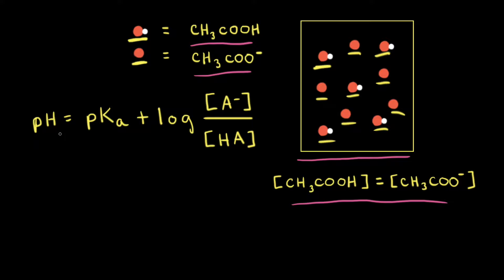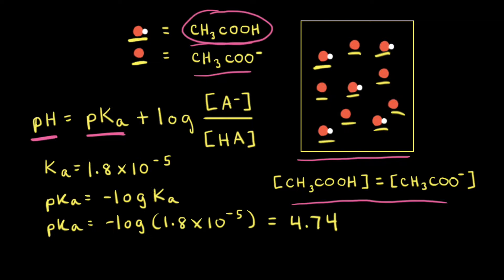Next, let's think about the Henderson-Hasselbalch equation. Our goal is to calculate the pH of this buffer solution represented in the particulate diagram. We need to know the pKa of the weak acid, which is acetic acid. At 25 degrees Celsius, the Ka value for acetic acid is equal to 1.8 times 10 to the negative fifth. The Ka value is less than 1 because acetic acid is a weak acid. To find the pKa of acetic acid, we take the negative log of the Ka value. The negative log of 1.8 times 10 to the negative fifth is equal to 4.74.